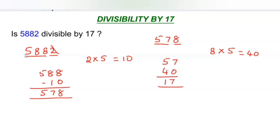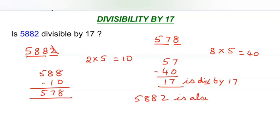We got an answer which is exactly divisible by 17. We know that 17 is divisible by 17. So if you are getting a number which is divisible by 17, then we can conclude that the given number 5882 is also divisible by 17. Let us check with another example.